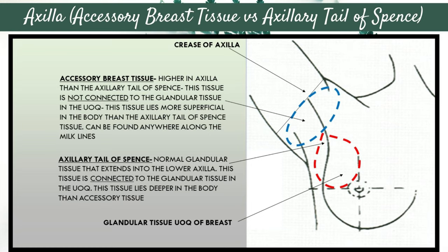Accessory breast tissue can be found anywhere along the milk lines. You may find it lower in the axilla in the same location as the axillary tail of Spence, but you'll recognize it because it's not connected directly to that tail of Spence or upper outer quadrant tissue, and it will be more superficial on the ultrasound image. You may also find it in the abdomen or even in the groin — it will appear as a superficial patch of white glandular tissue.